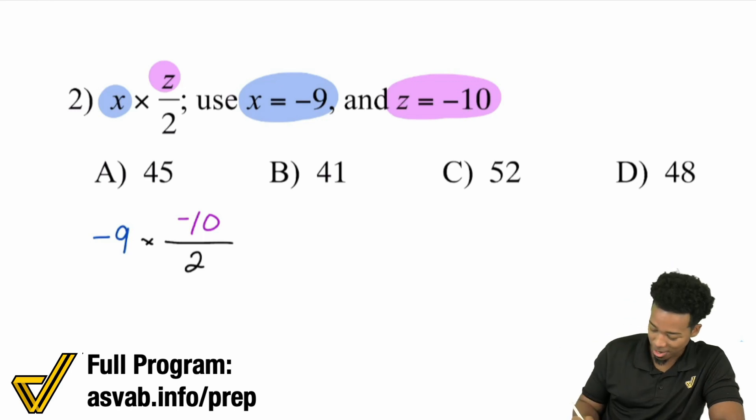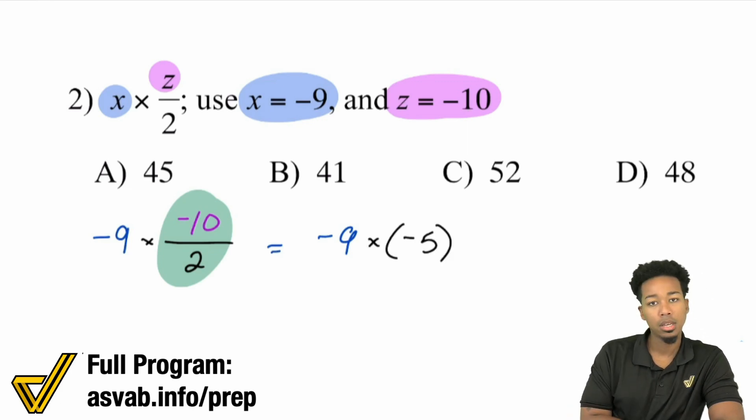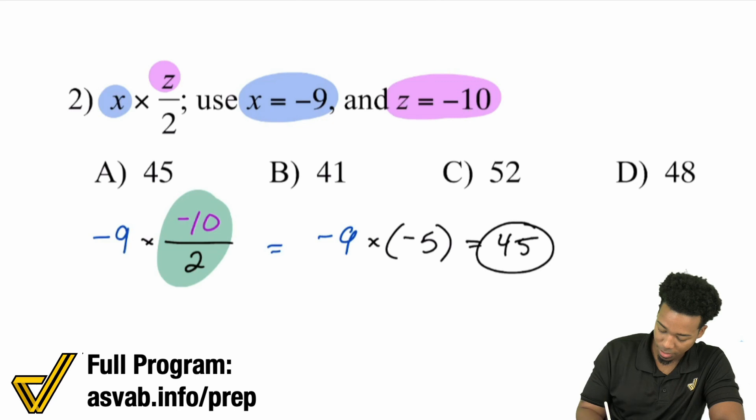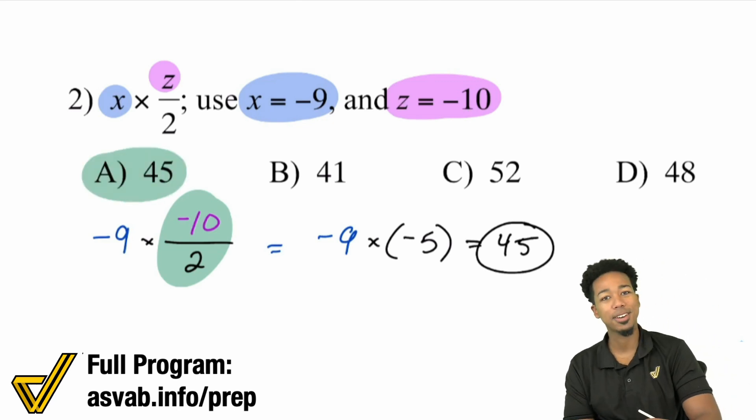What we're going to take care of now is, what's -10 divided by 2? That'll end up being -9 times -5. Negative times a negative is a positive. 9 times 5 is 45, and you are set.